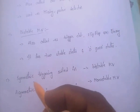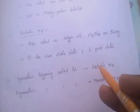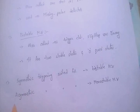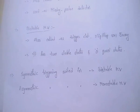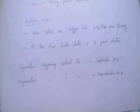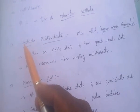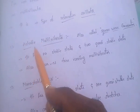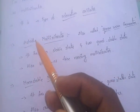Symmetric triggering is suited for the bistable multivibrator, and asymmetric triggering is suited for the monostable multivibrator. To summarize: astable means no stable states — two quasi-stable states — and it is called a square wave generator and free-running multivibrator.